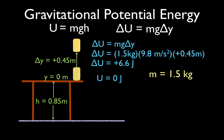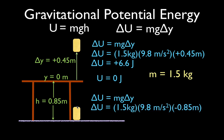Now we could just as easily have started with the object right here at the tabletop and in this case lowered it down to the floor, and again calculate the change in the potential energy. The mass is still 1.5 kilograms, the acceleration due to gravity is still 9.8. But what's the change in Y? Well, the table has a height of 0.85 meters, so the change in Y is minus 0.85 because we're lowering it — we said this is our 0 on the Y axis, so when we lower it down we're moving in the negative direction. Therefore, we lower the potential energy of the object by 12.5 joules.